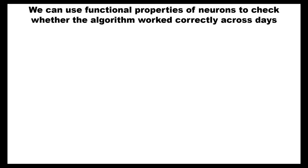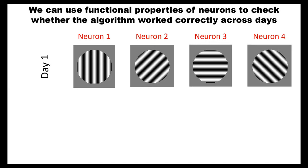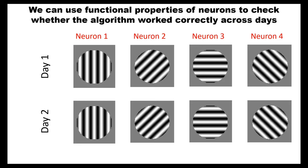So how would we get the ground truth data for this kind of question? We might want to use functional properties of neurons to check the performance of the algorithm. For example, let's say we recorded from four neurons on one day and found that they have orientation preference — neuron one responds a lot to a vertical grating, neuron two responds to a grating tilted 45 degrees, and so on. Then you record on day two — what responses would you expect from these same four neurons? Well, you would expect that the orientation preference wouldn't change very much. This is basically the idea of the talk.